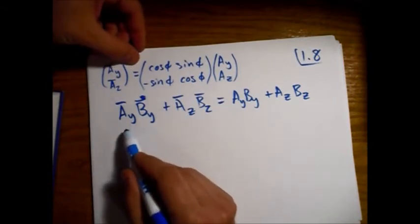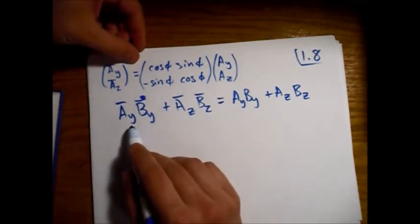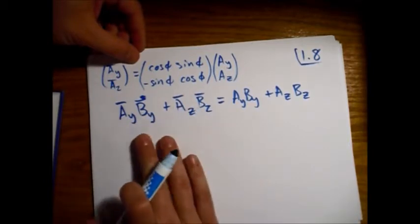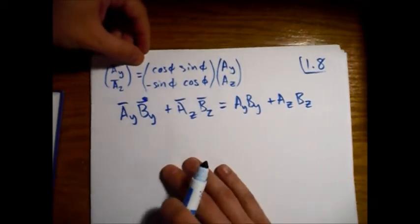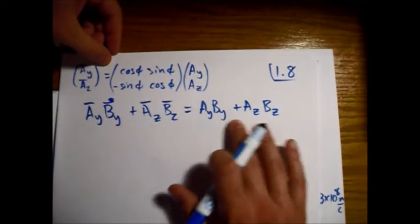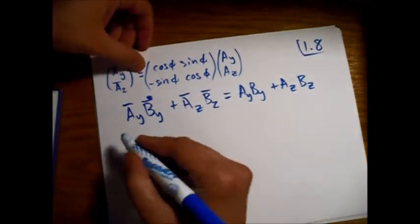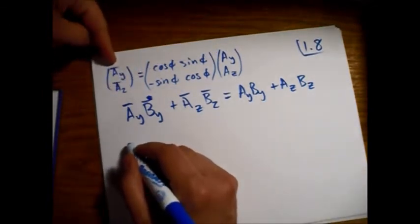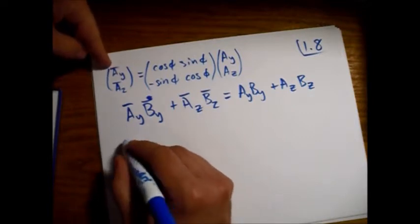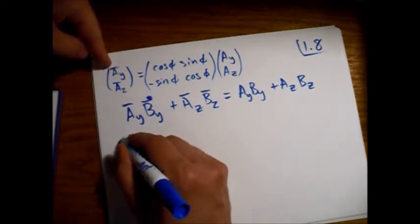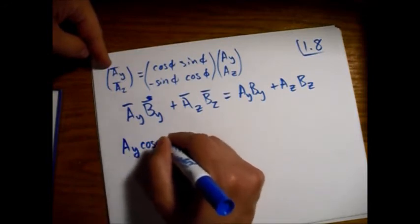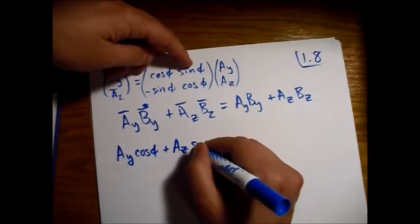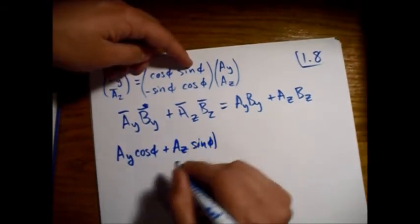Alright, so what we're going to do is just take out, we're just going to plug in the full expressions for these in terms of these, and we'll see that it simplifies down to these. So, A_y, the transformed vector here, is equal to A_y cosine φ plus A_z sine φ, like that.